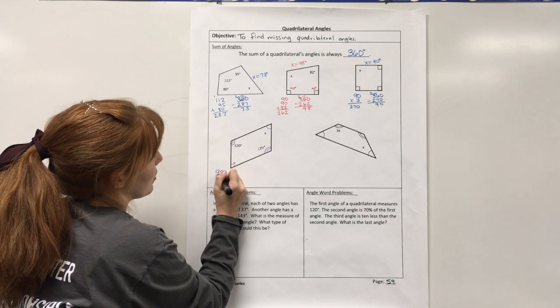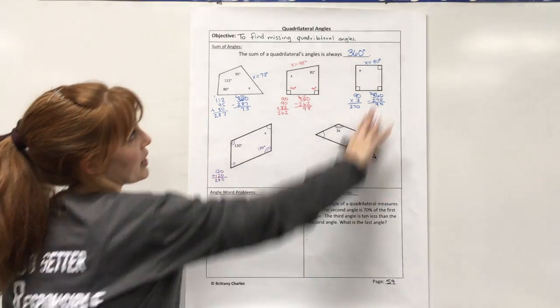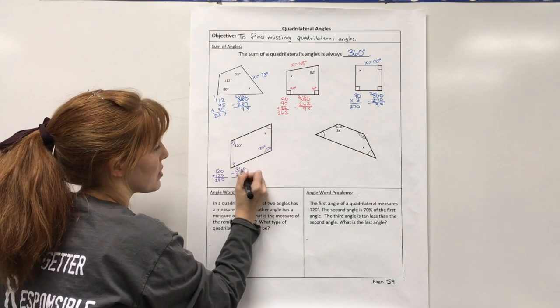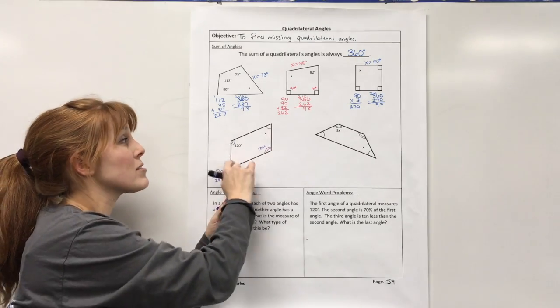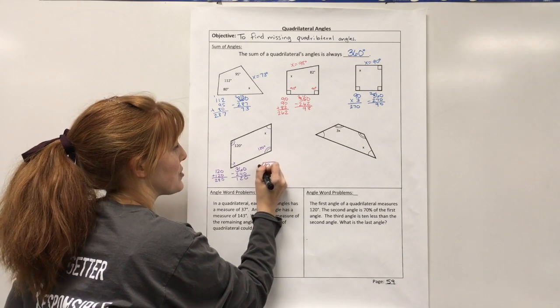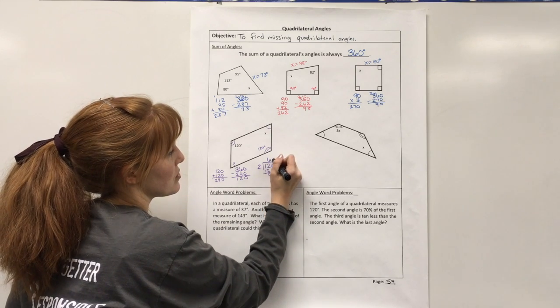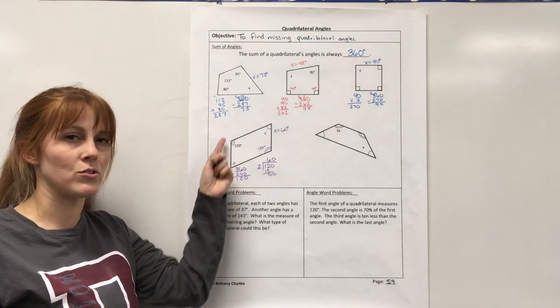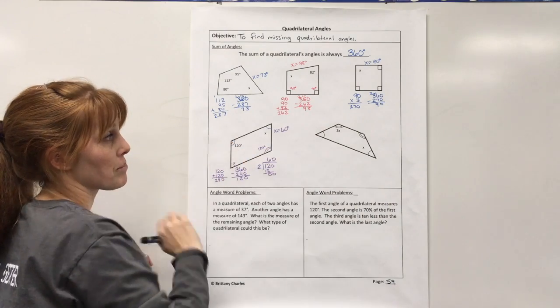So we have 120 and 120, that's 240 degrees. So let me subtract that from 360. So I have 120 degrees left over for these two angles, and since they are both the same, I would then take 120 and divide it by 2. So that would go in 6 times, which is 60. So X equals 60 degrees. All right, so don't forget that you can use that trick when you have a rhombus or a parallelogram because the opposite angles are equal.